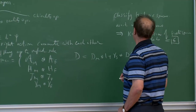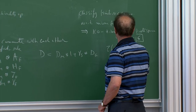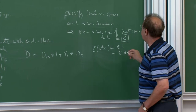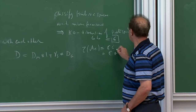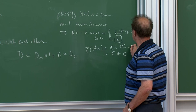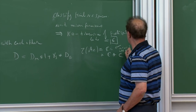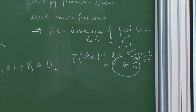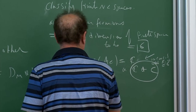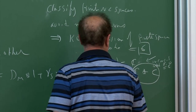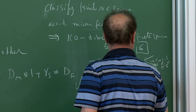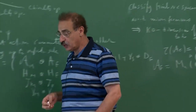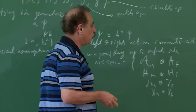We did the classification and deduced that the center of the algebra was either ℂ or ℂ⊕ℂ. However, ℂ was inconsistent with K-O dimension 6, leaving only one possibility. The algebra of the finite space A_F was essentially M_N(ℂ) ⊕ M_N(ℂ) and variations — replacing the complex numbers with reals or with quaternions.